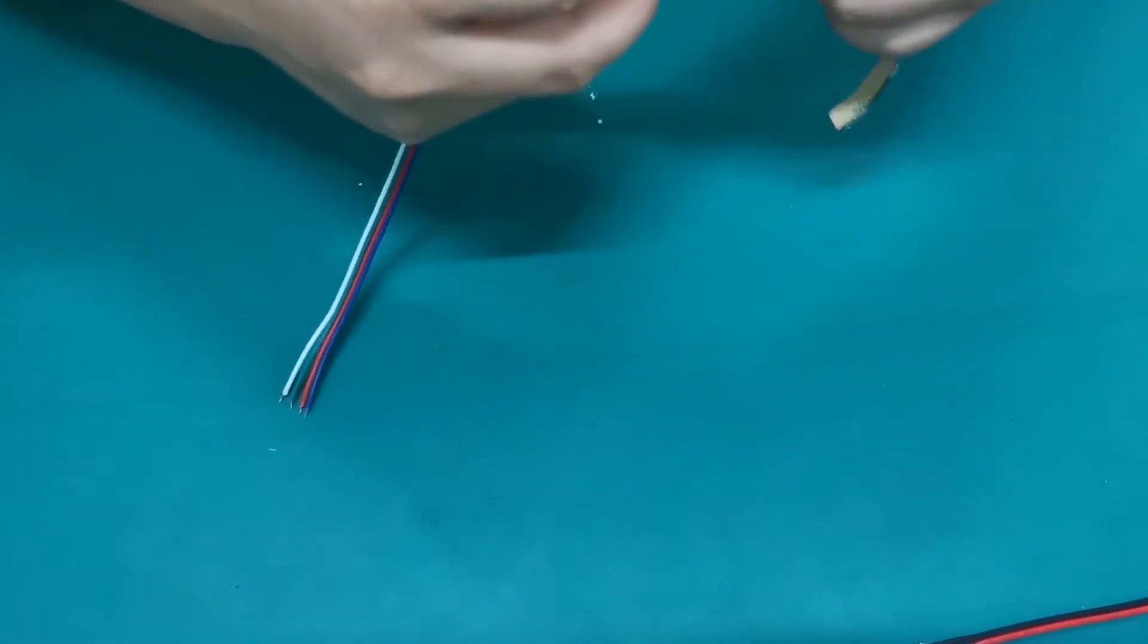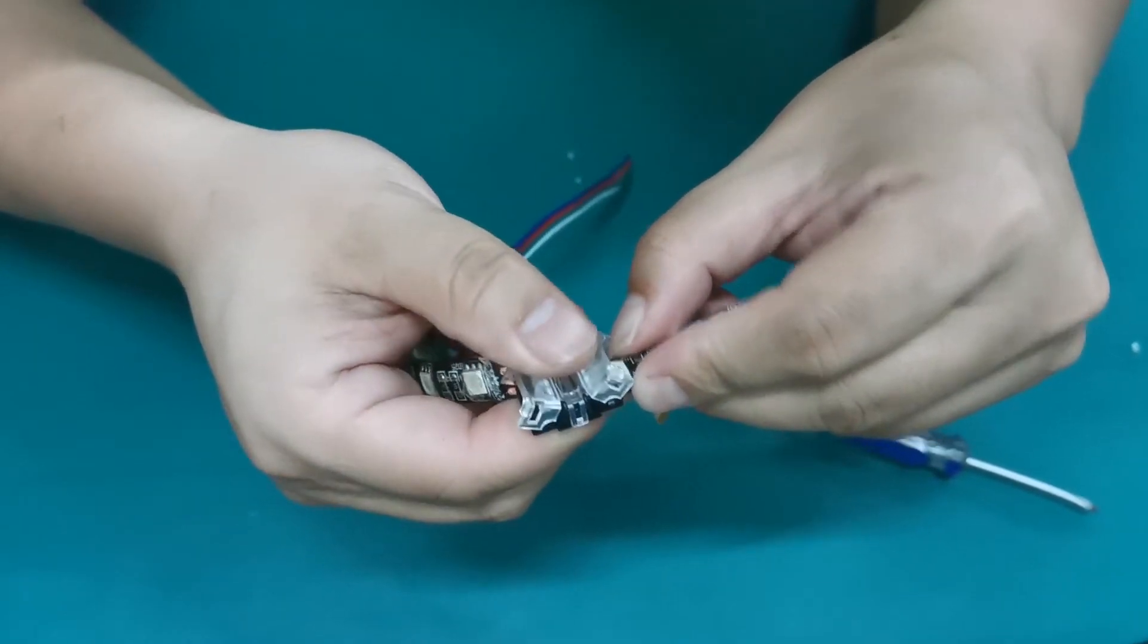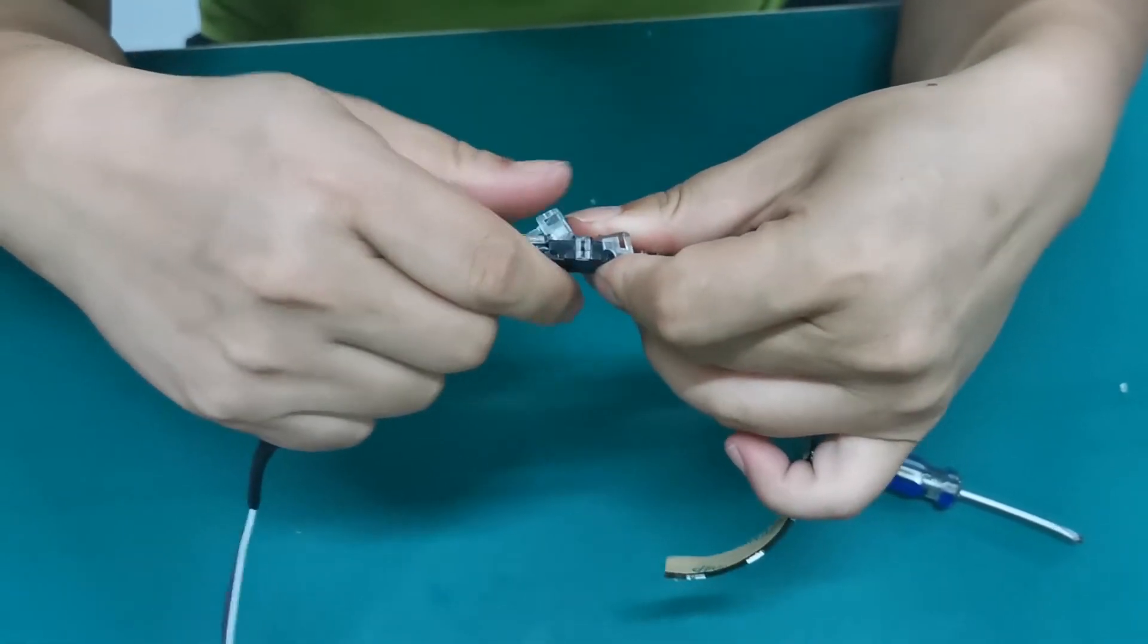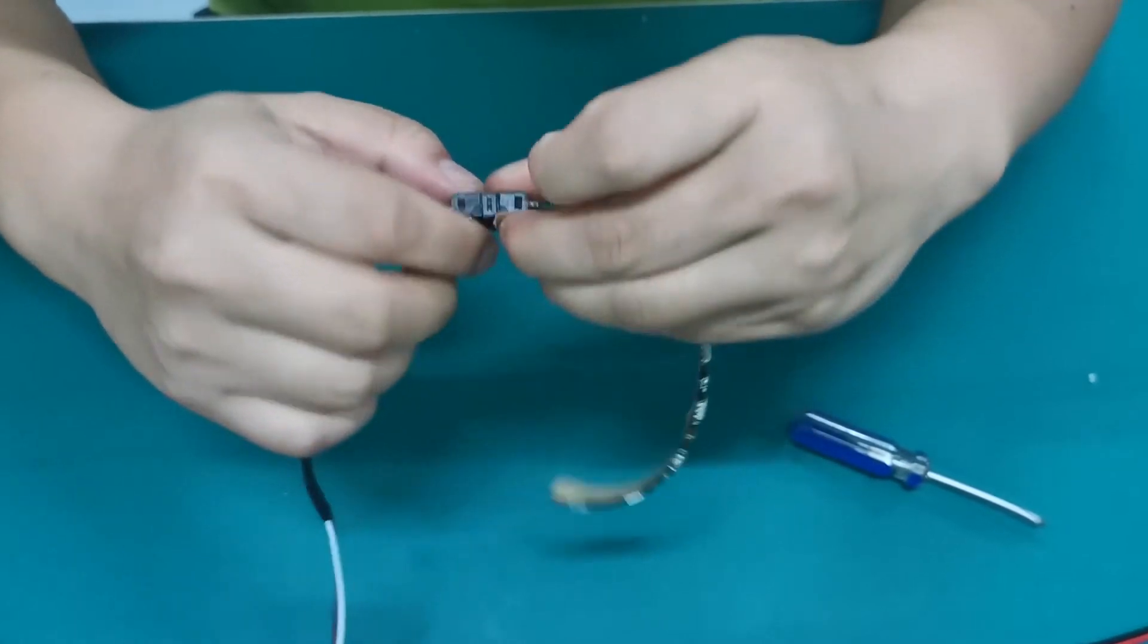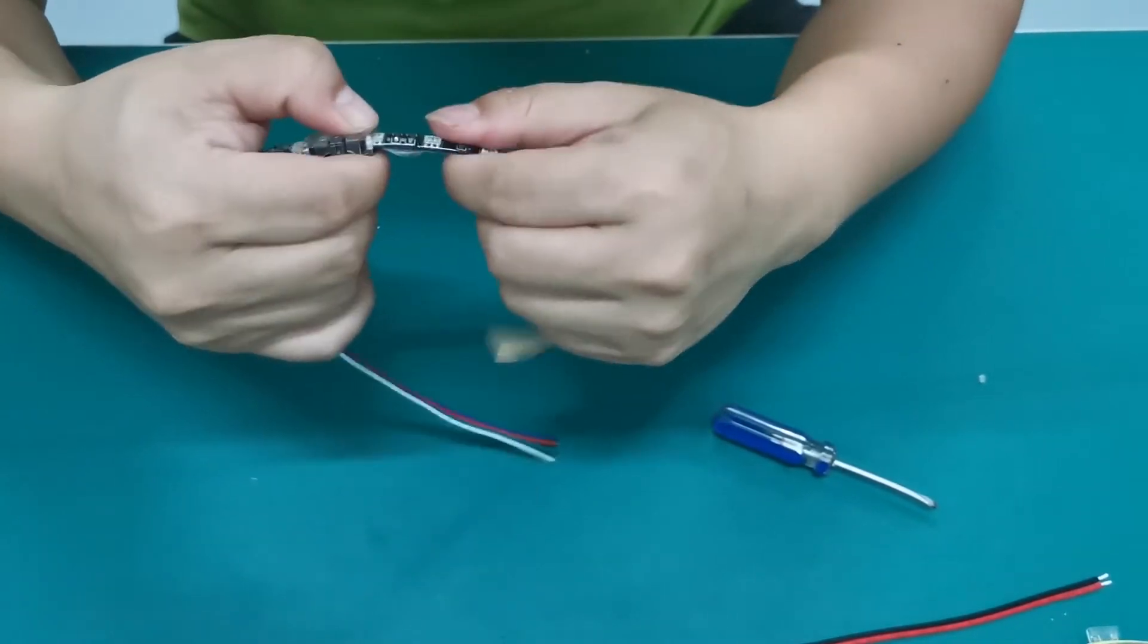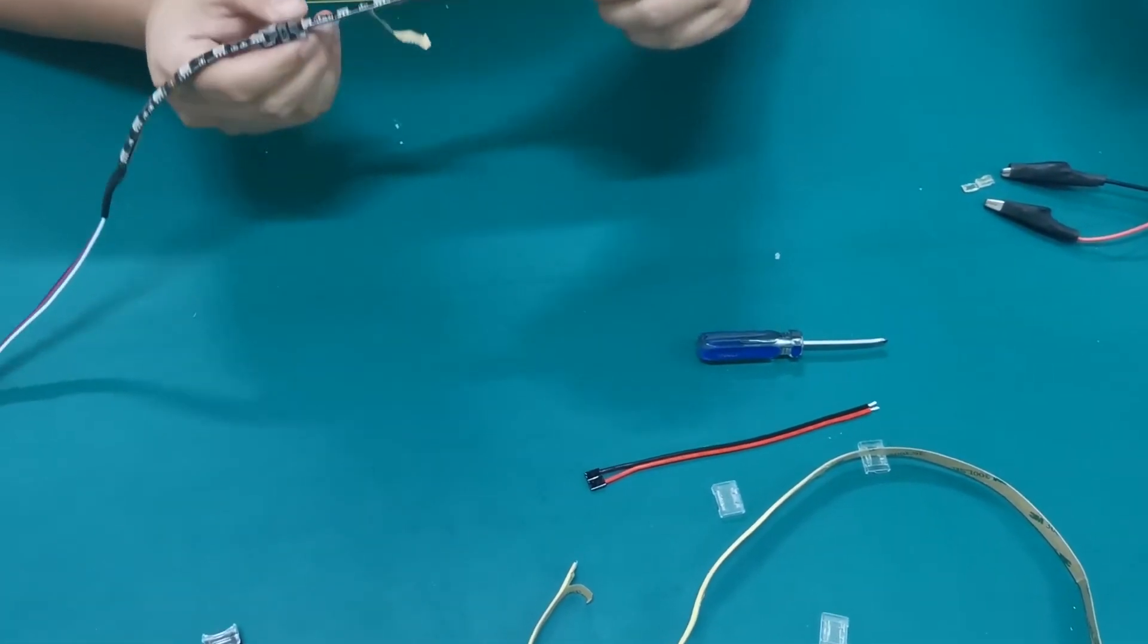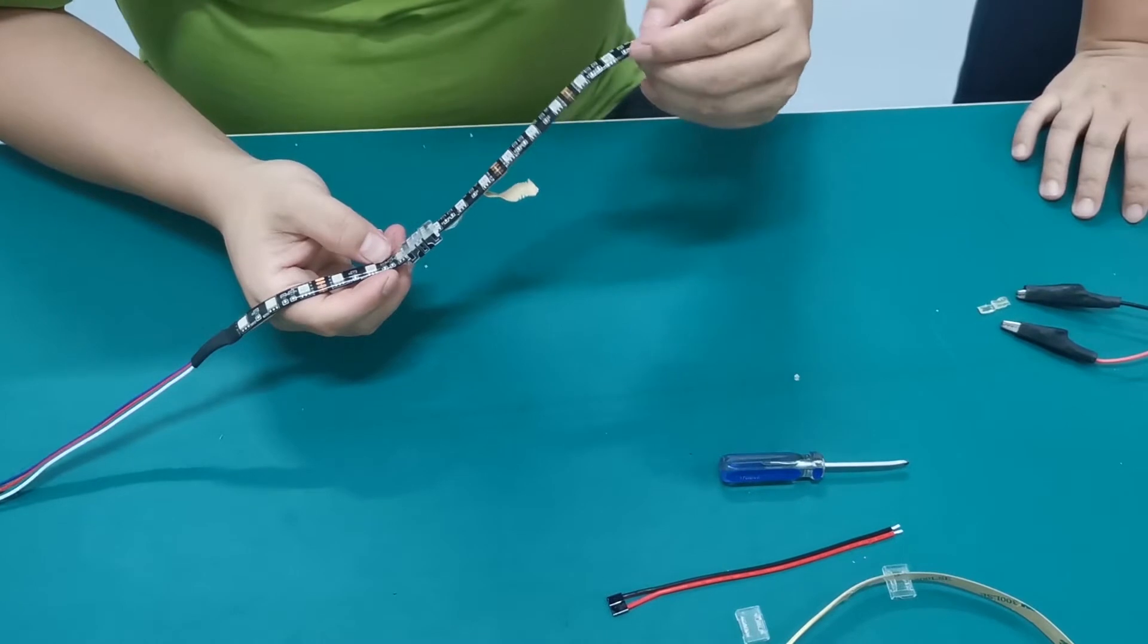We should cut some glue and let the PCB out. Then use the connector. So when we take out the surface glue and let the PCB outside, then you put the strip with the connector. It's very easy. Just use the hand. And we can light it.